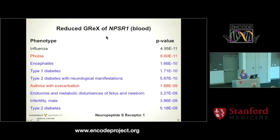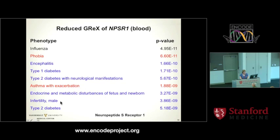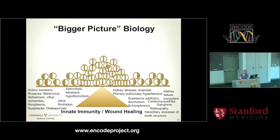This is just one of several different axes we've been able to identify and name. One interesting example is neuropeptide S receptor 1 (NPSR1), which has been studied in rats for decades for the fear response — and to see it associated with phobia was exciting. It had already been associated with asthma with exacerbation and a number of endocrine things. Not all genes are on the innate immunity axis. It is a major axis with lots of phenotypes, but there are other axes too.